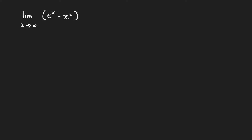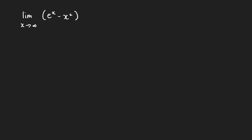Next problem: let's evaluate the limit of eˣ - x² as x approaches infinity. You might say the limit is already infinity because eˣ grows faster than x² as x approaches infinity. But how can we show that the limit is indeed equal to infinity? As x goes to infinity, eˣ goes to infinity and x² goes to infinity, so this has the indeterminate form infinity minus infinity.